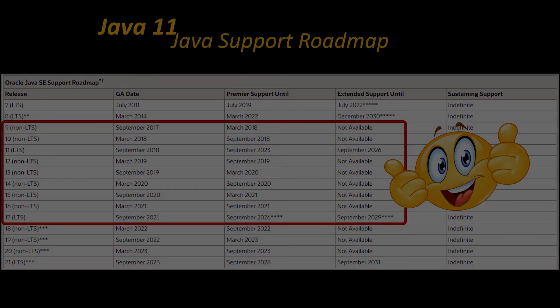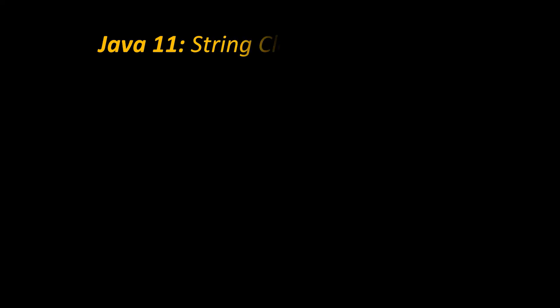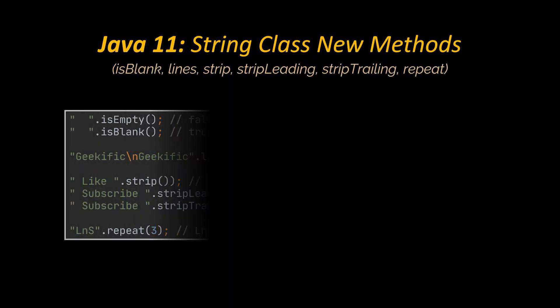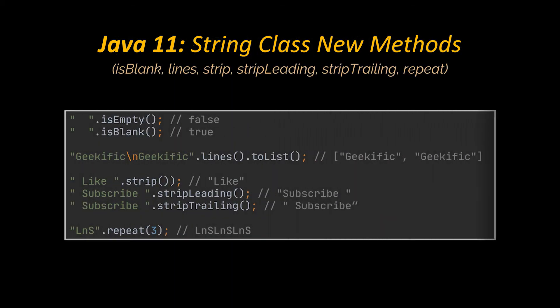Let's start with the features introduced by Java 11 — or basically 9, 10, and 11. I'll start with the new methods added to the String class. These methods are isBlank, lines, strip, stripLeading, stripTrailing, and repeat. As you can see in the example usages and the outputs in front of you, it is pretty straightforward what each method is meant to do.